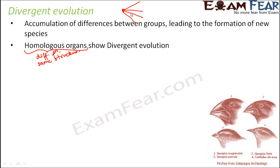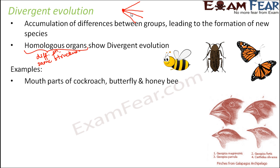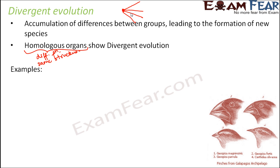Let us look at an example: Darwin's finches, one of the very good examples of divergent evolution. In the story of the Galapagos Islands, there was just one species that reached the island initially, and then over a period of time, we all know the story of Darwin's finches.